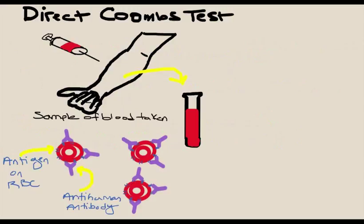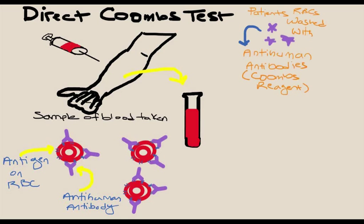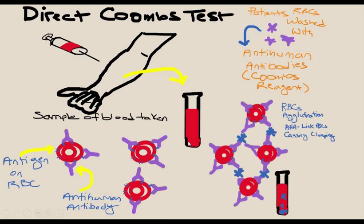The direct Coombs test tests antibodies attached to red blood cells. A blood sample is taken and red blood cells are washed with anti-human antibodies, or Coombs reagent. This causes the red blood cells to clump together. If you've heard of cold agglutination test, it's the same concept where red blood cells clump together with Coombs reagent linking them.